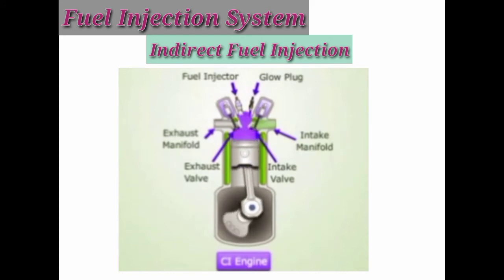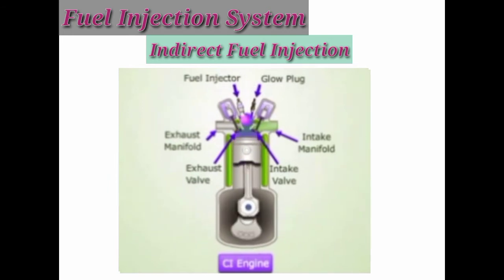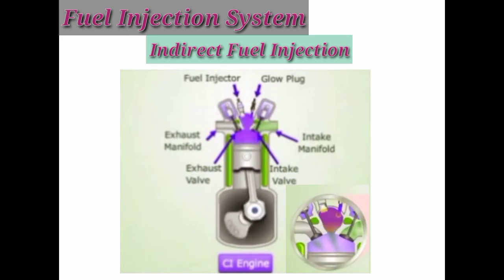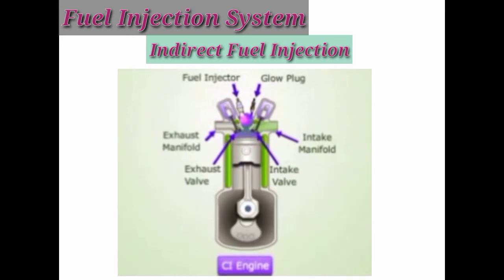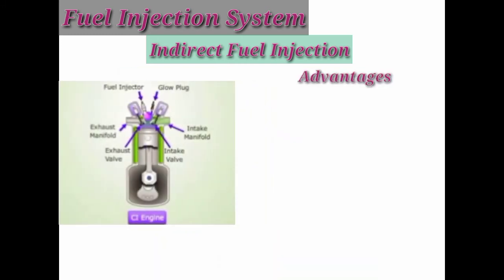During the compression stroke, air from the engine cylinder first enters the pre-combustion chamber or swirl chamber. As the air is compressed, its temperature rises and the air becomes hot. At this moment, an injector injects fuel into the pre-combustion chamber. Combustion begins in the pre-combustion chamber and then spreads to the entire cylinder, providing a better and more efficient combustion.